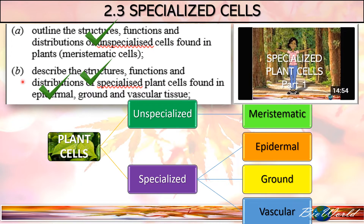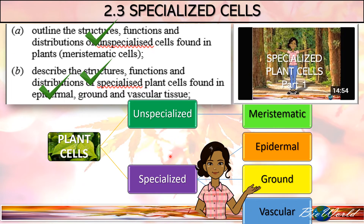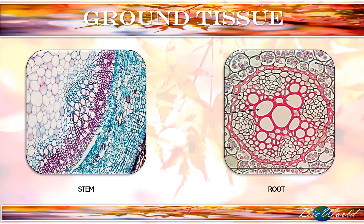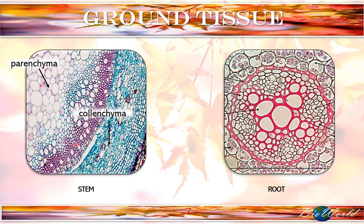Since we have concluded this in our previous video, today's video will be all about ground tissues. Before you here are microscope images of the stem cross-section and the root cross-section. Here in the stem cross-section, ground tissues like the parenchyma cells are visible here, and over here you have the collenchyma cells, and these red little cells are the sclerenchyma cells.